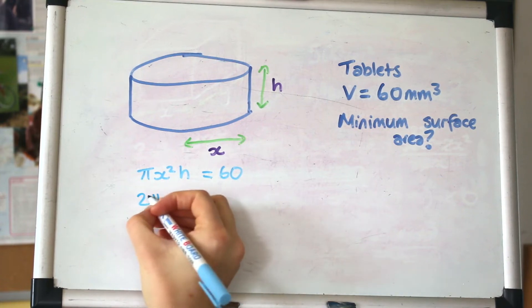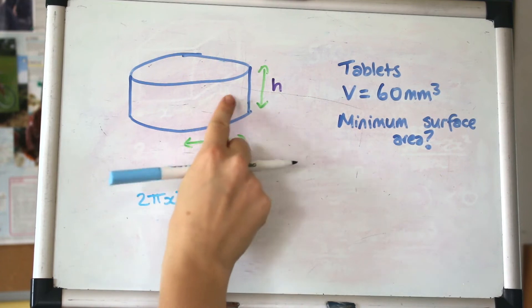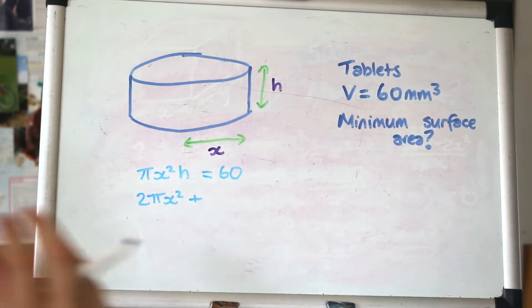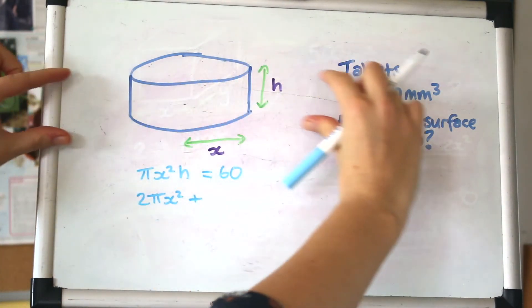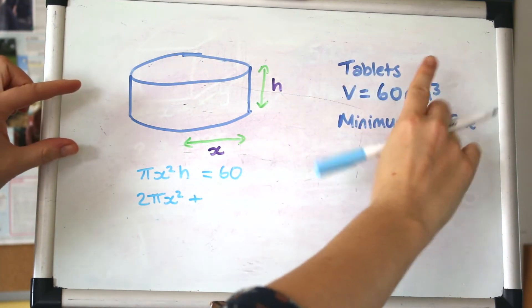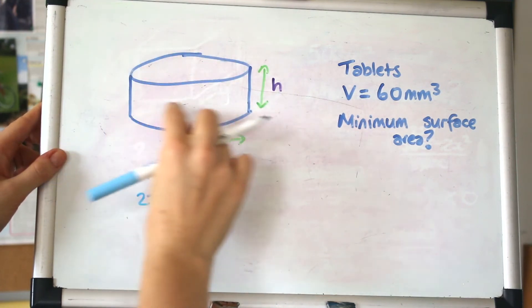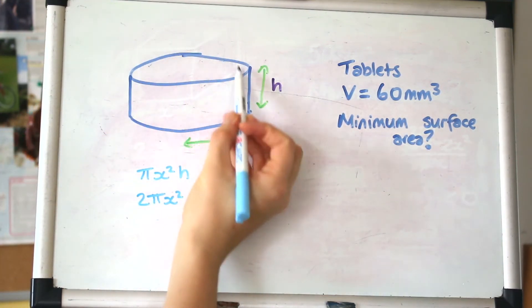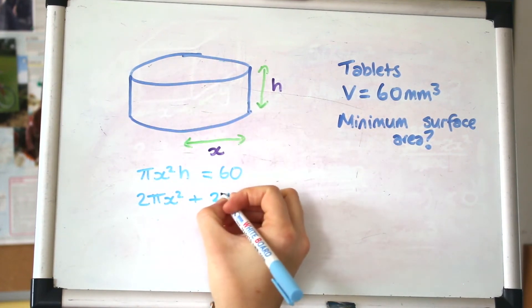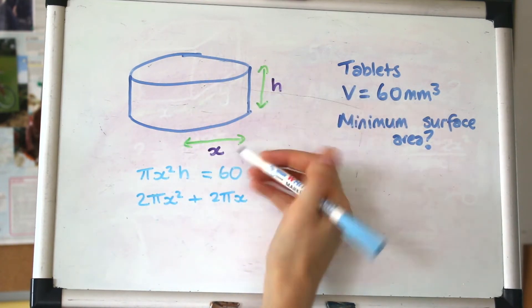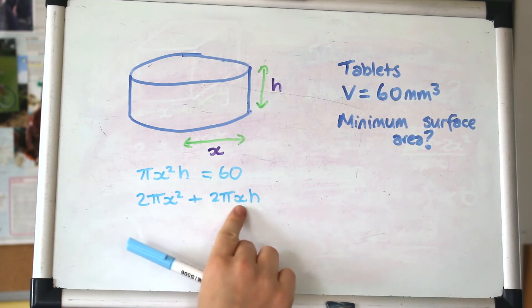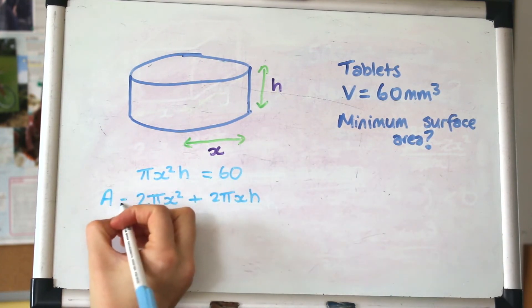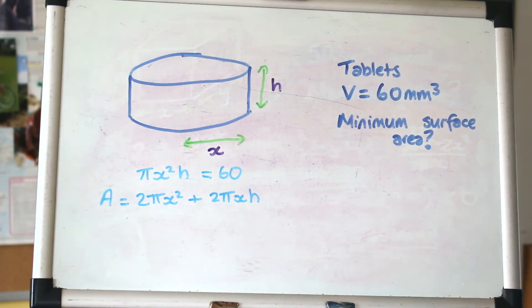You might know the formula for surface area off by heart, but if not, don't worry, we can work it out. We've got the area of the circle at the top and bottom, so 2πx². Then we're adding on the area of the band that goes around the outside. If you take the band of a cylinder and flatten it, it would be a rectangle where h is the width and the length would be the circumference of that circle, which is 2πx.